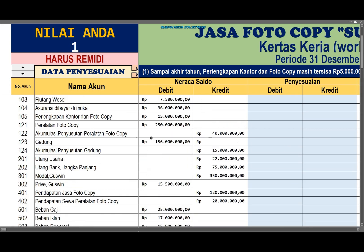Kemudian kreditnya adalah perlengkapan. Kita lihat di sini, perlengkapan. Kredit dengan nilainya sama, 10 juta. Kalau salah tempat, nilainya tidak berubah karena yang diminta adalah perlengkapan. Nah, nilainya berubah.